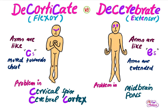Today I have made it easy and funny for you to easily differentiate between these two. In decorticate rigidity, the arms are like a C — the arms move towards the chest. The arms are flexed towards the chest, and the word 'decorticate' contains the letter C.